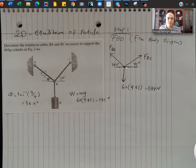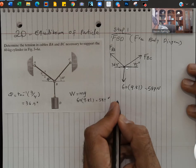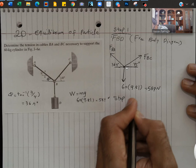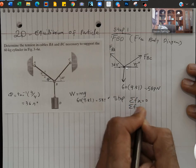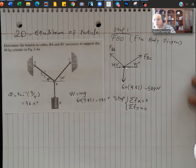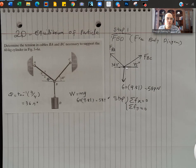So in the second step, in order to get the equilibrium, in step 2 we're going to say that sum of Fx equal to 0, sum of Fy equal to 0.